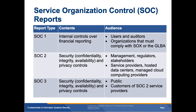Service Organization Control, or SOC, reports come in different levels. SOC 1 covers internal controls over financial reporting, with an audience of users and auditors, and organizations that must comply with the Gramm-Leach-Bliley Act. SOC 2 covers security, confidentiality, integrity, availability, and privacy controls, with an audience of management, regulators, stakeholders, service providers, hosted data centers, and managed cloud providers. SOC 3 also covers security, confidentiality, integrity, availability, and privacy controls, but its audience is the public and customers of SOC 2 service providers.